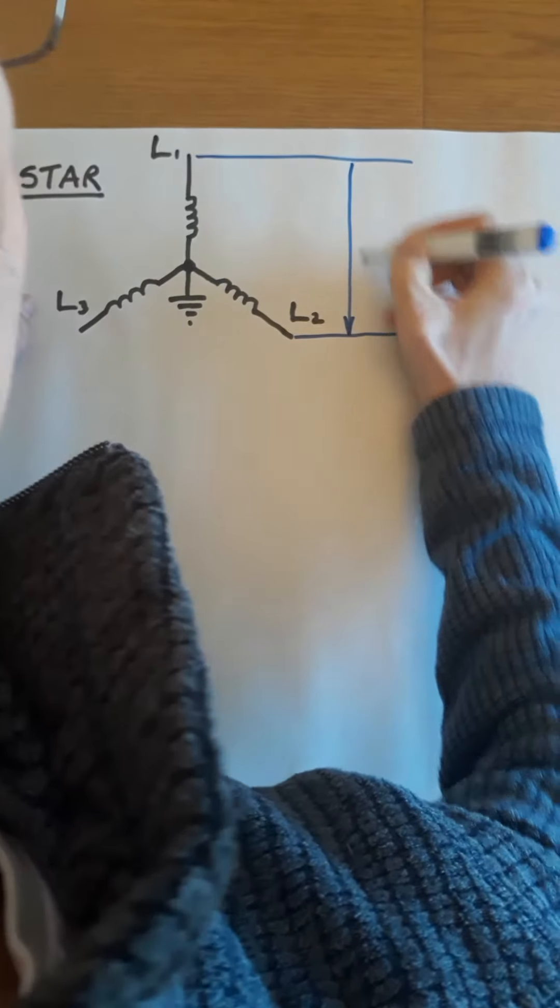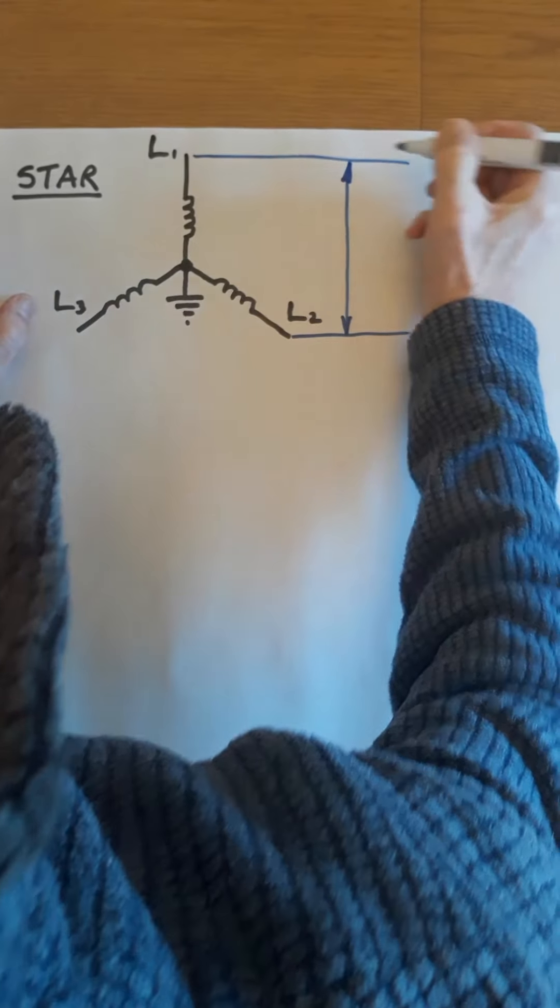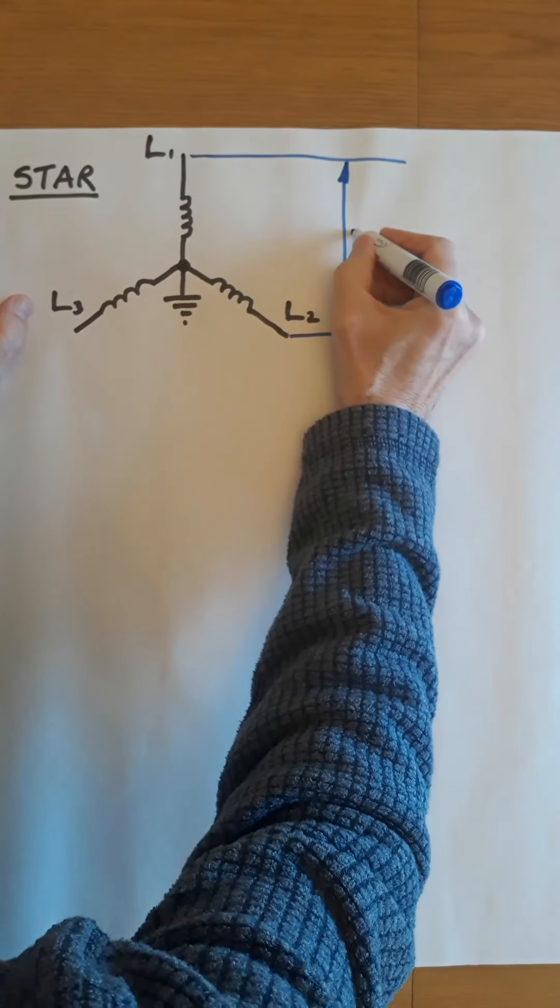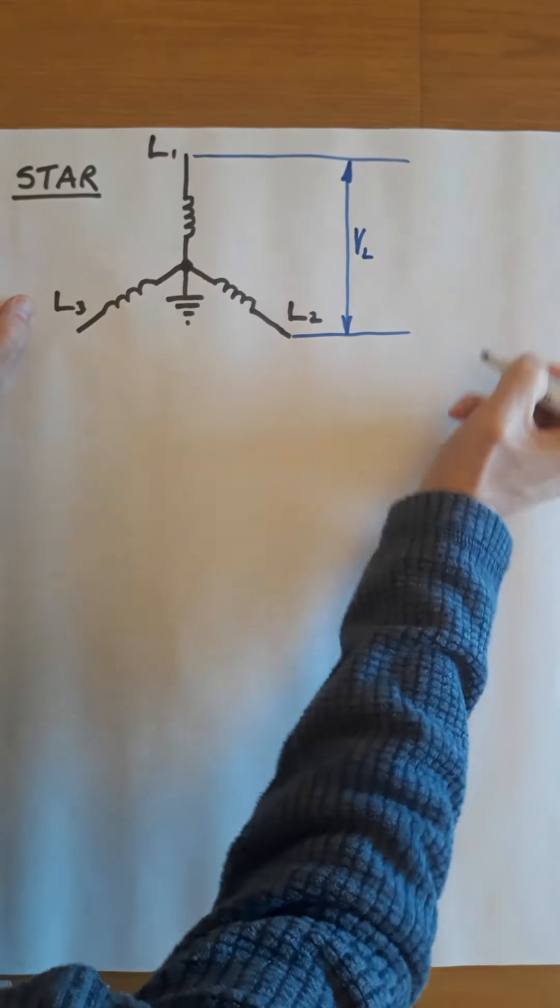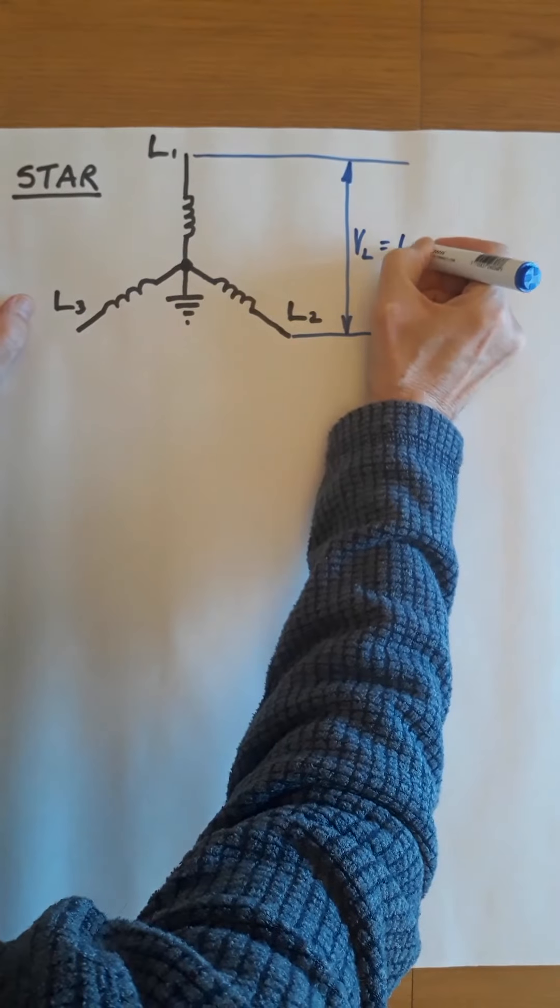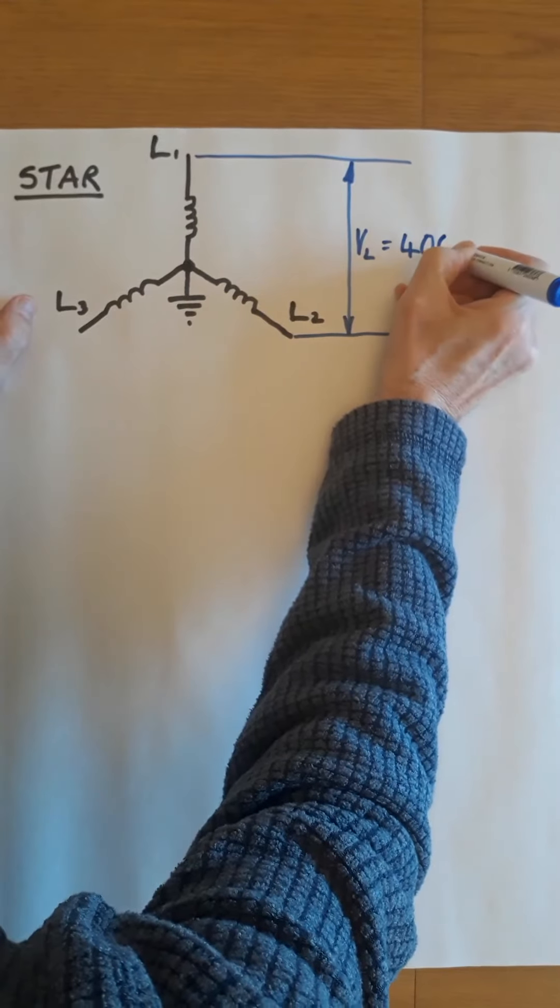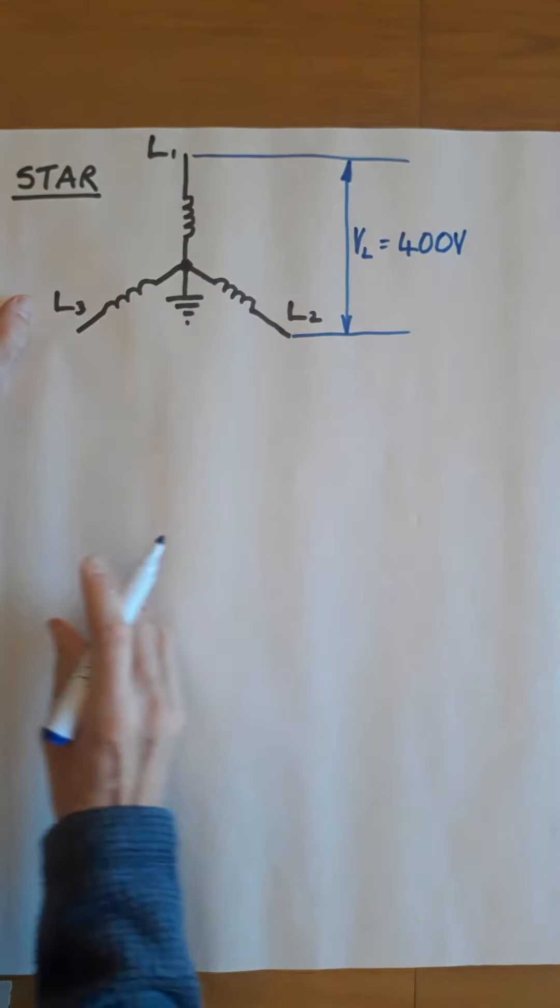The voltage across any two lines we call VL, and that equals 400 volts. That's a nominal value; it may vary a little.